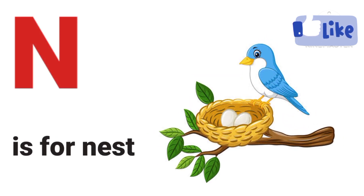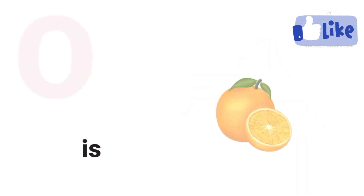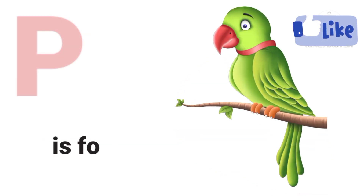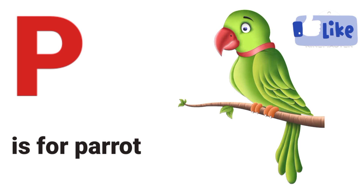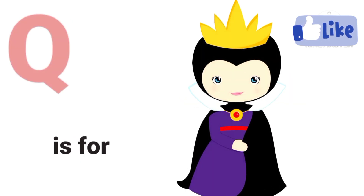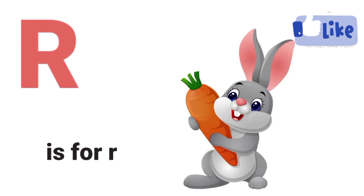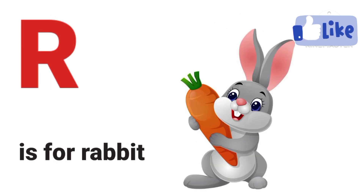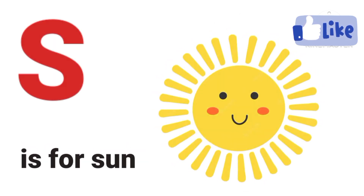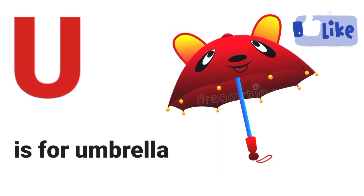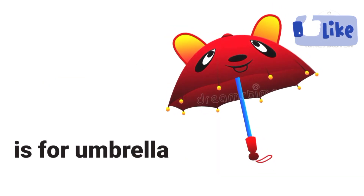N is for Nest. O is for Orange. P is for Parrot. Q is for Queen. R is for Rabbit. S is for Sun. T is for Tiger. U is for Umbrella.